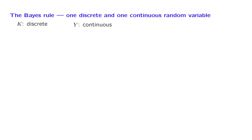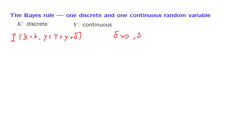We will look at the probability that the discrete random variable takes on a certain numerical value, and simultaneously the continuous random variable takes a value inside a certain small interval. Here delta is a positive number which we will take to be very small, and in fact we will be interested in the limiting case as delta goes to 0.